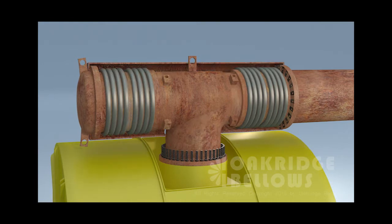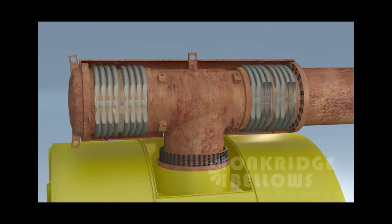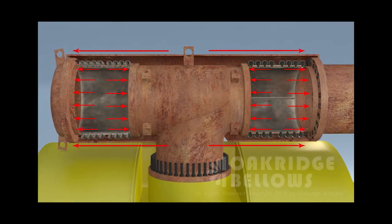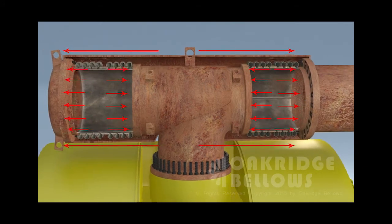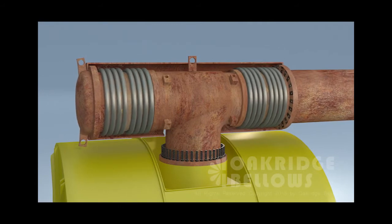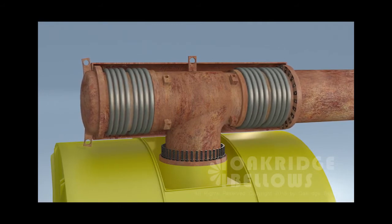Put the cover back on, and now when we pressurize it those forces are balanced. Each bellows is wanting to extend, the covers not letting it do it. But now that T section is free to move back and forth. That's how our pressure balance works.